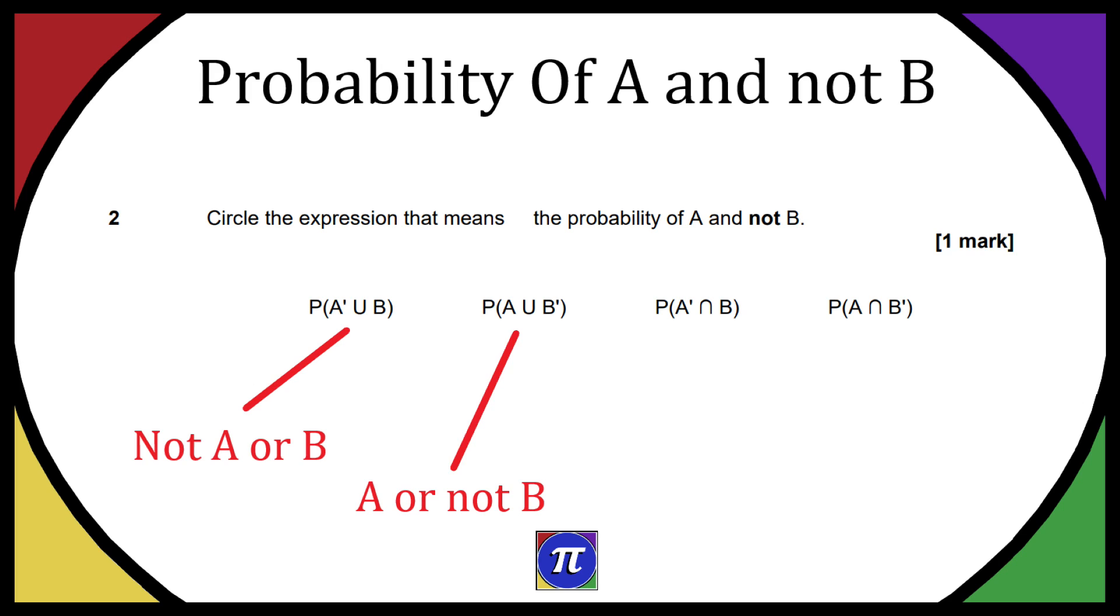Now on the next one we have an N. So we have the probability of not A and B. So the P is the probability of everything in the bracket. The A dash means not A and the N means and and the B is just B. So we have the probability of not A and B.